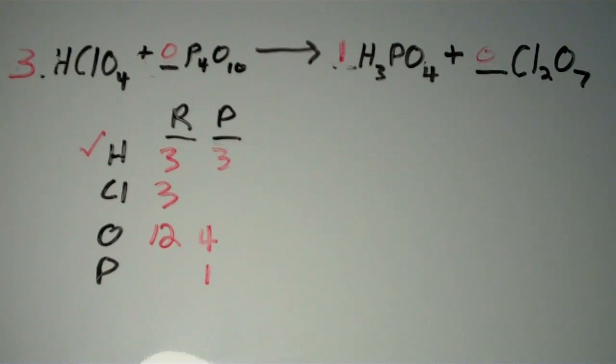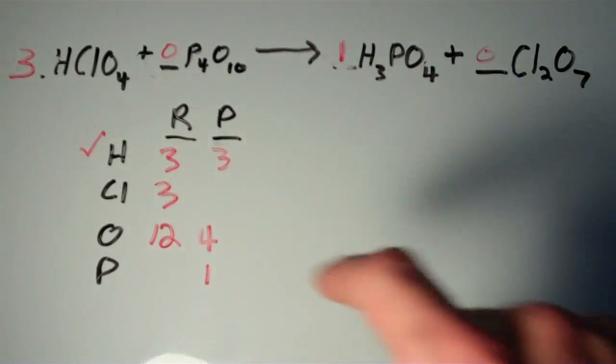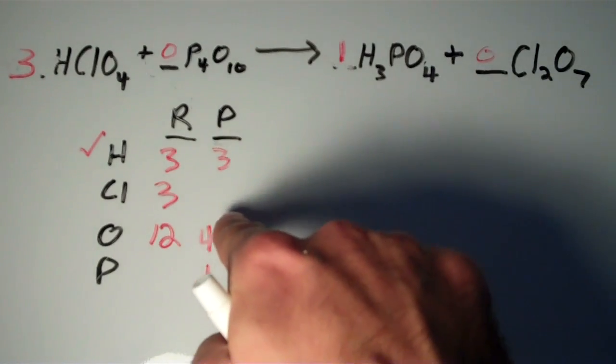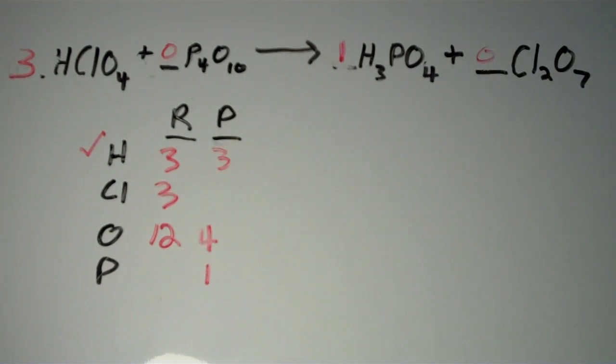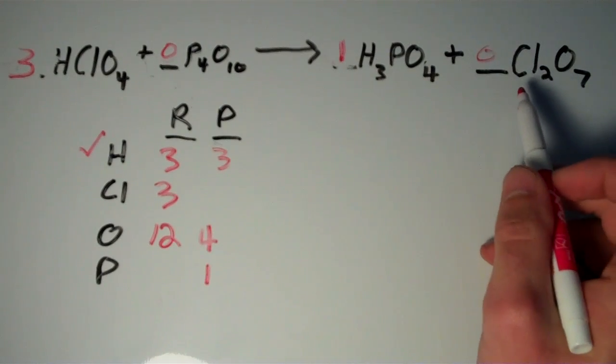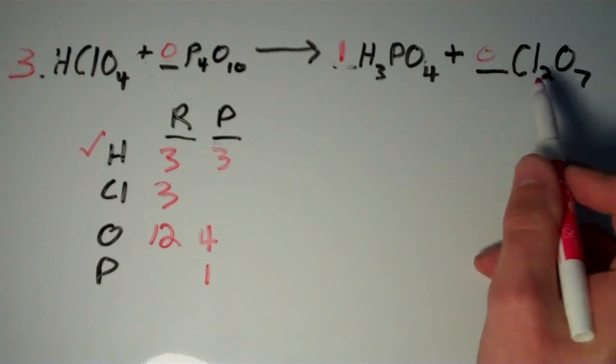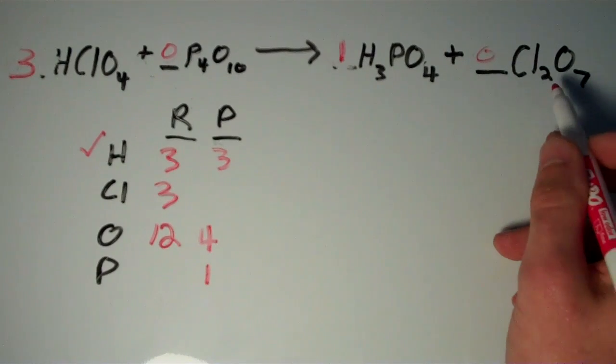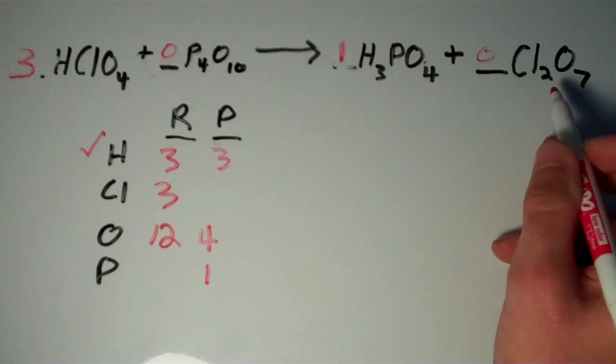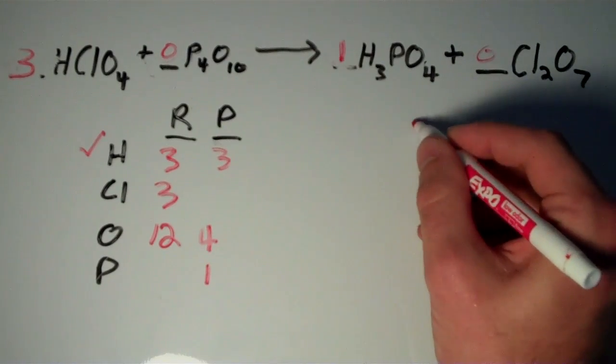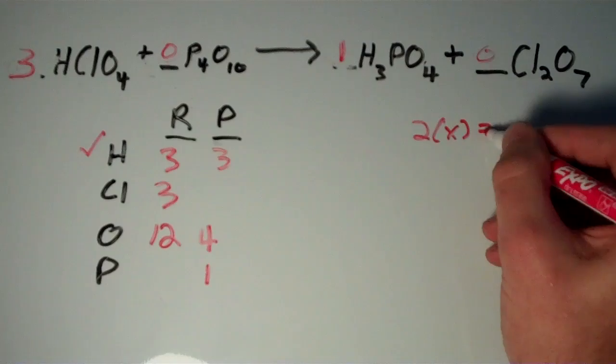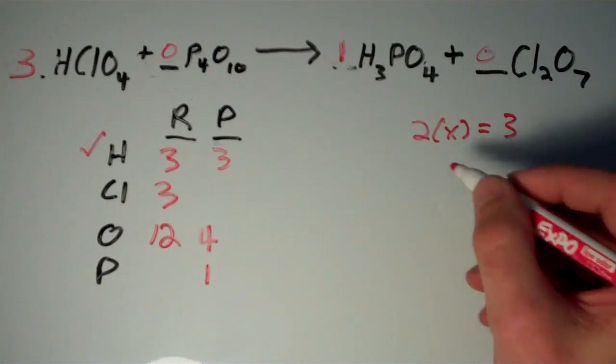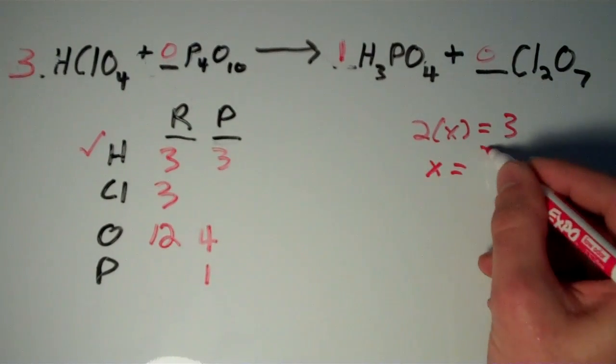Let's say we want to move on to chlorine. So again, we need to identify which side has the most chlorines. So far that's the left side. We have three chlorines and we don't have any on the product side. So I need to find a coefficient to give this to make three chlorines on both sides. So since there are two chlorines in each one of these Cl2O7 molecules, I'm going to have to multiply two by something to get three. If you solve for x, you'll get x is equal to three halves.